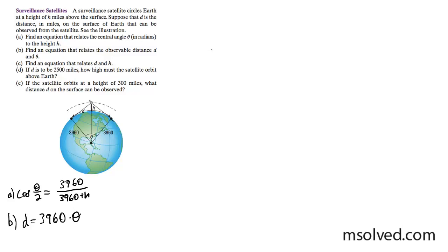Part C, find an equation. I'm going to write this up here. Part B, find an equation that relates d and h. That's going to be cosine of d divided by 7,920, which is the diameter. It's equal to 3,960 over 3,960 plus h.